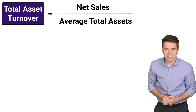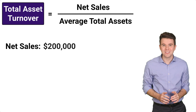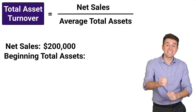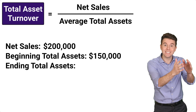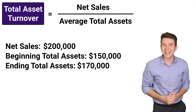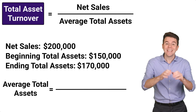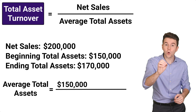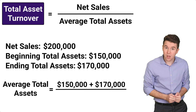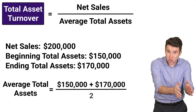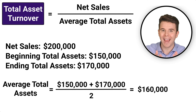Let's put this ratio into practice with some numbers. Assume a company has net sales of $200,000, and total assets at the beginning of the year were $150,000, and total assets at the end of the year were $170,000. To get average total assets, take beginning total assets of $150,000 and add ending total assets of $170,000, then divide by 2 to get $160,000 in average total assets.